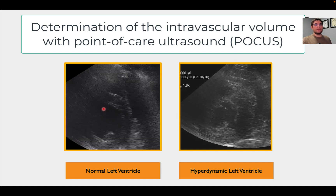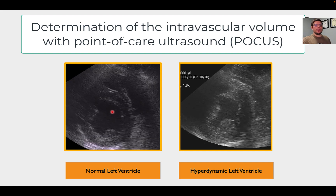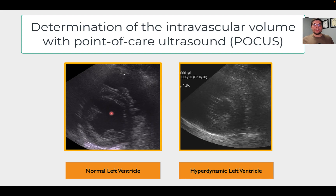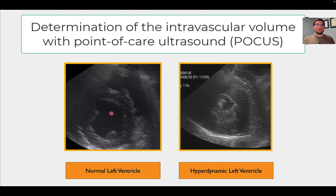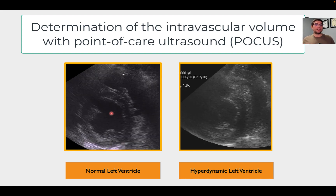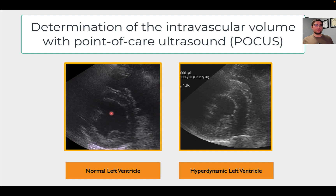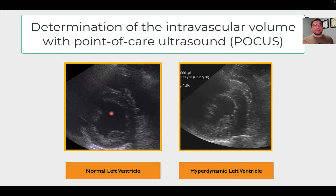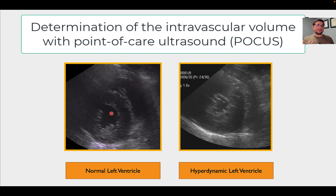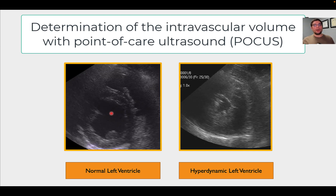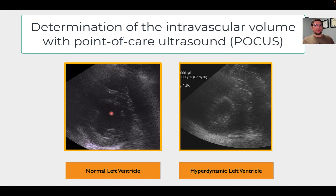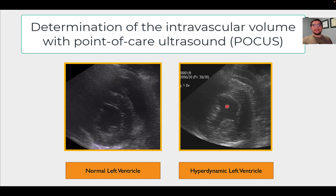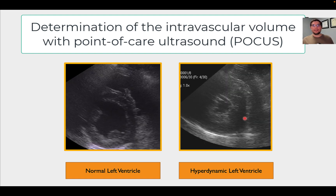We call it the mushroom view because the lumen within the left ventricle reminds us of a mushroom. In a healthy patient with normal intravascular volume, that's what the heart should look like. We call it normal contractility — a subjective eyeball assessment of the heart tells us it's consistent with normal heart function and intravascular volume.